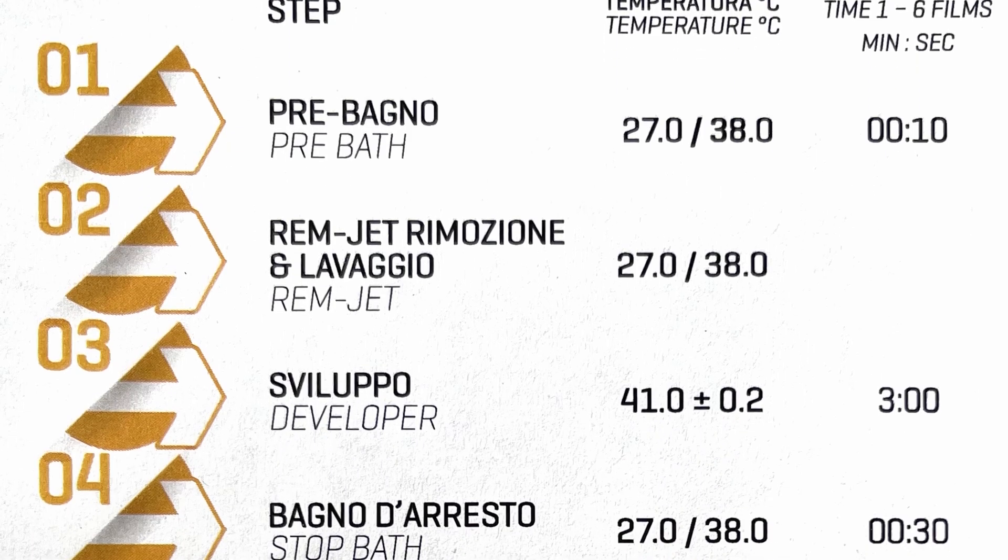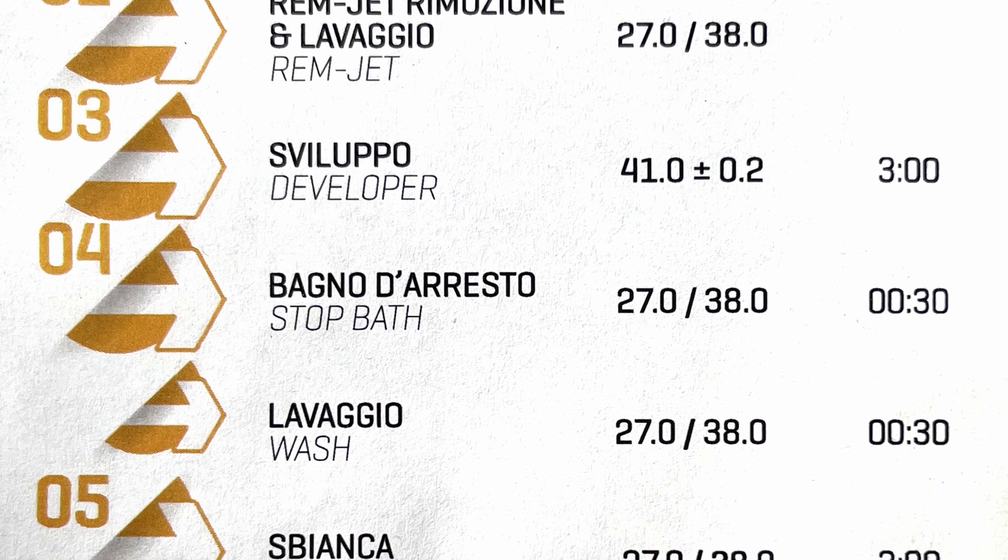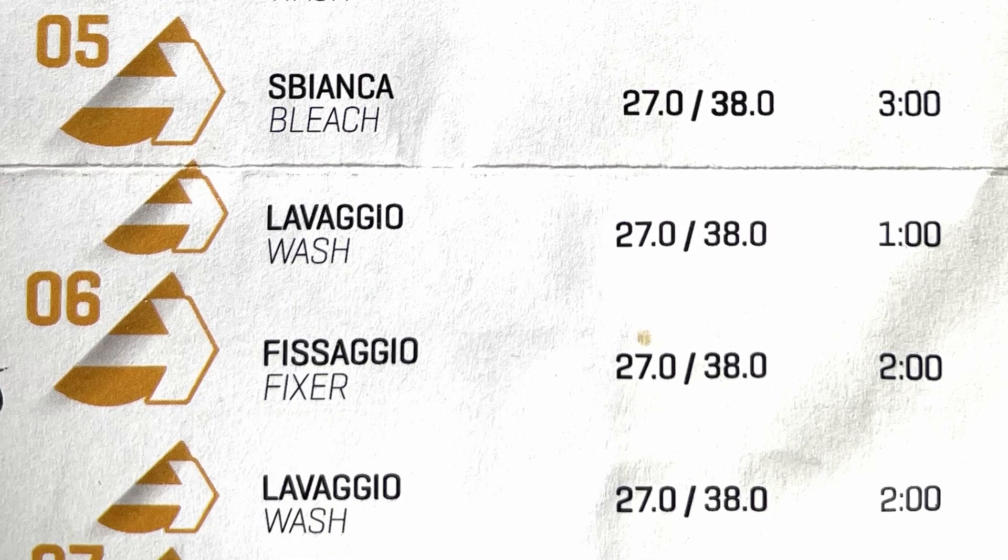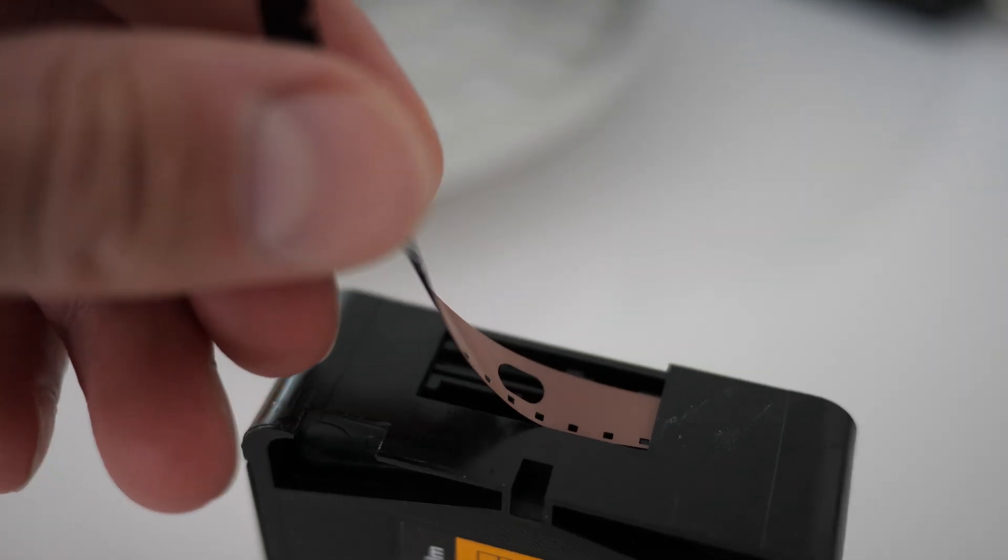ECN2 is a quite complex process which not only involves developer, stop bath, bleach, fix and a stabilization step, but also the infamous ramjet removal step at the beginning.